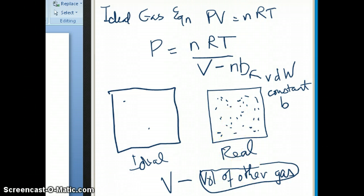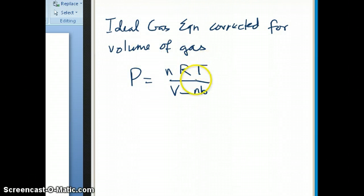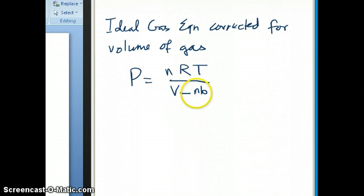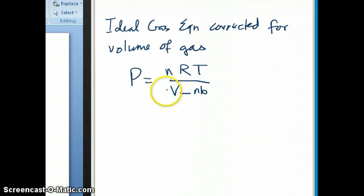The correction we made was to add a term to the ideal gas equation. We started with P equals nRT over V, and now we subtract from V a component, n times B, where n is the number of moles and B is the volume factor for each gas. That term corrects for the volume that the gas particles occupy.